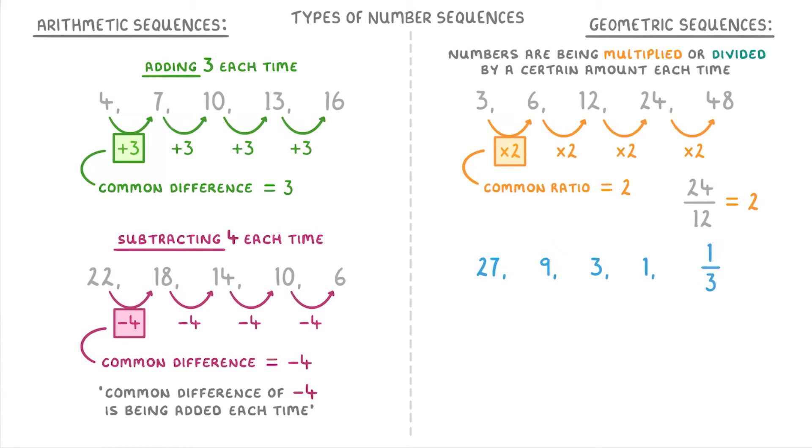For this last one we can again start off by checking what the difference between each of the terms is. So minus 18, minus 6, minus 2, and minus two thirds. Because it's changing by a different amount each time we know it can't be an arithmetic sequence, so next we need to check if it's a geometric sequence.